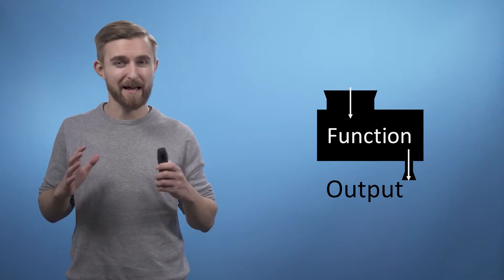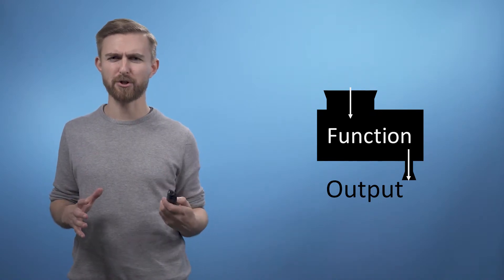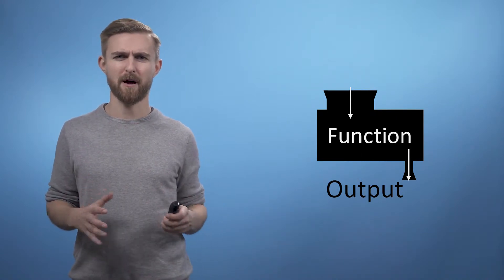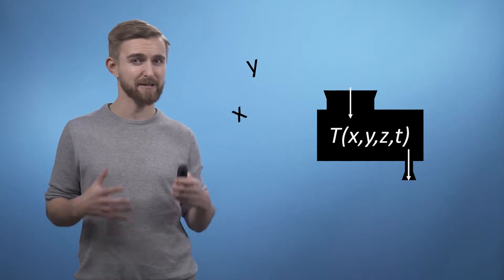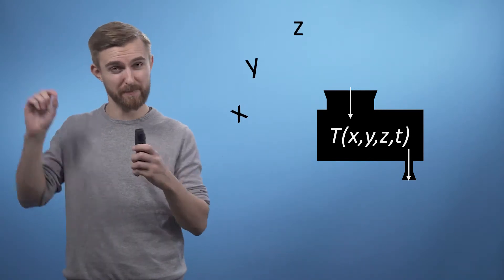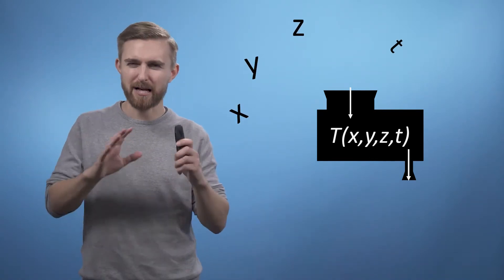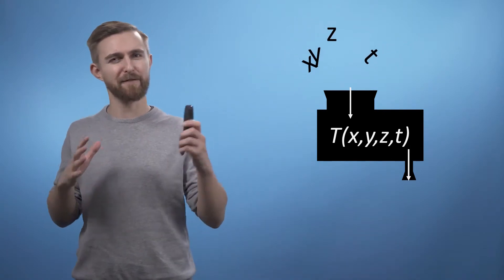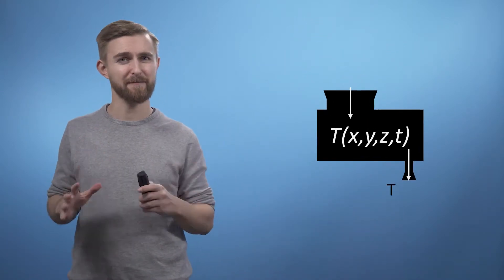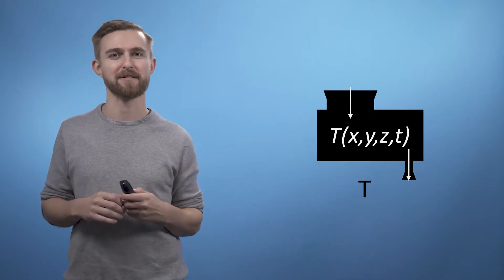So for example, if I had a function for modeling the distribution of temperature in this room, I might input the x, y, and z coordinates of a specific location I'm interested in, as well as the time t, and then the function would return the temperature at that specific point in space at that moment in time.